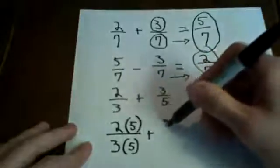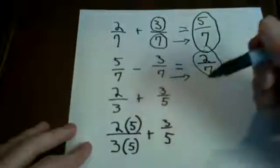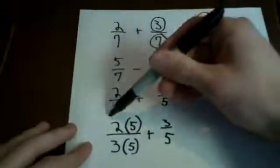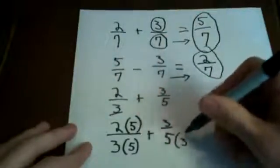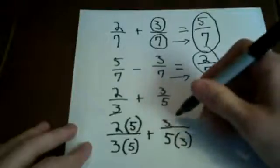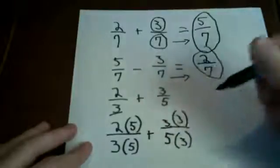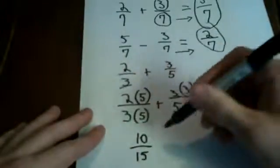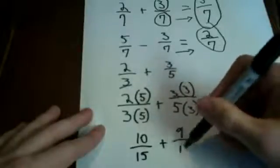And then on the other fraction of 3 5ths, you're going to do the same type of thing. You're going to take your other denominator, which is 3, and you're going to times the top and bottom by 3. And what that will give you is 10 over 15 plus 9 over 15.